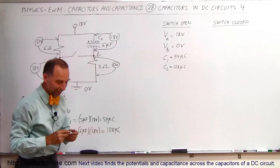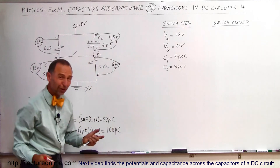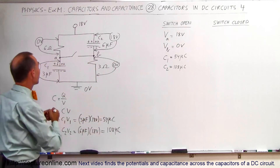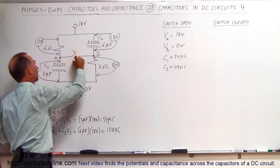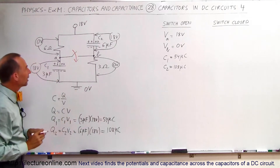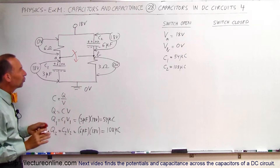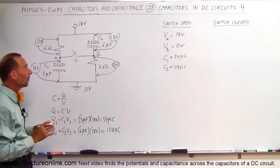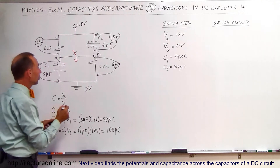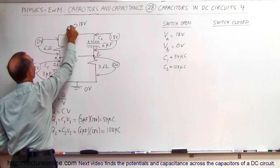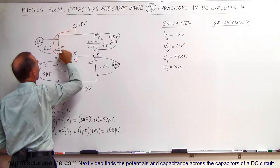Now we're ready to close the switch. To make things easier to understand, we're going to close the switch — indicated here in red. Once that happens, the current can now flow through this new path.